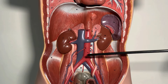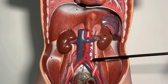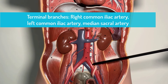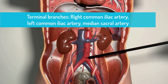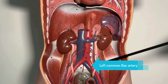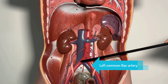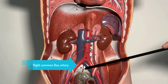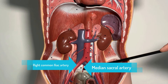Now, coming to the terminal branches. The terminal branches are three in number: the left common iliac artery, the right common iliac artery, and the median sacral artery.